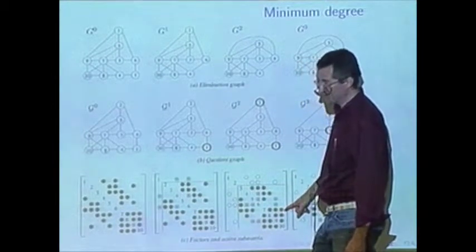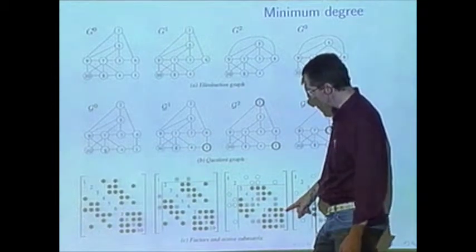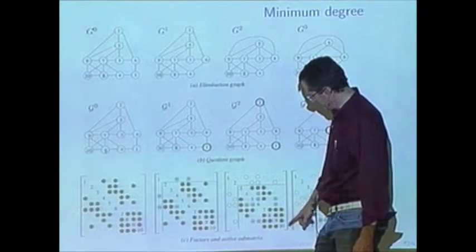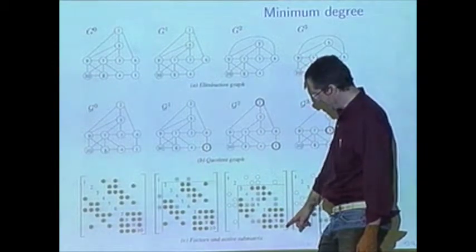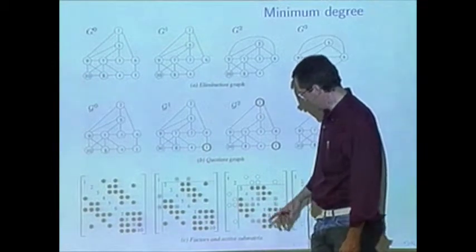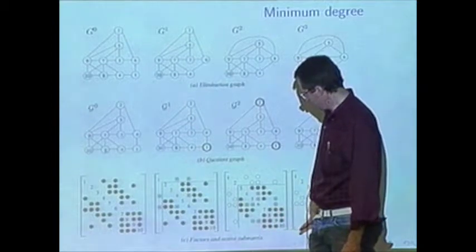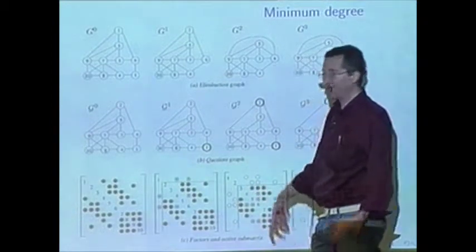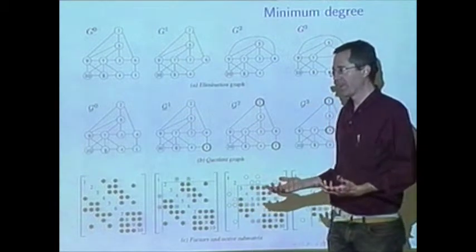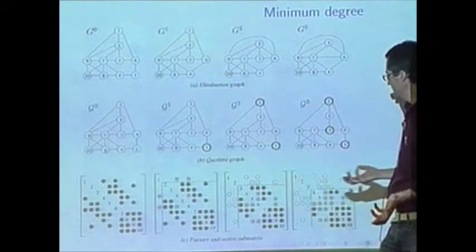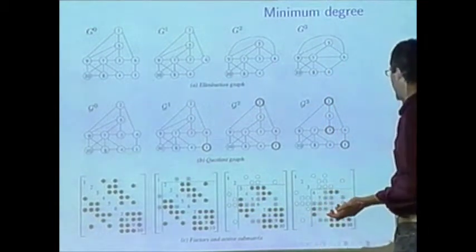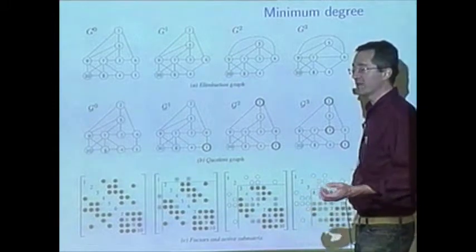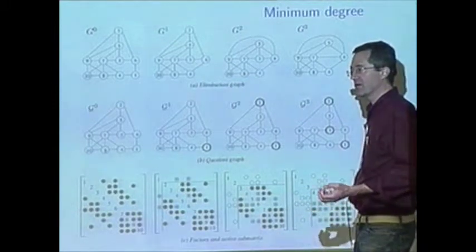You don't want to pick node 7 — that would cause almost the whole graph to fill in. Node 8 has degree 4, node 10 has degree 3. There are 3 nodes — nodes 3, 4, 5, and 10 — all with degree 3. So which do you pick? Well, if I was smart, I would pick node 10.